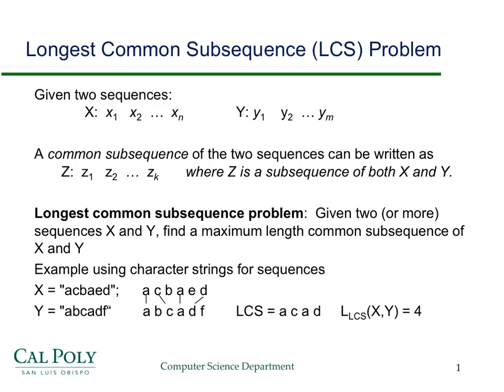This screencast is an extension of the screencast on the Longest Increasing Subsequence problem. This one covers the Longest Common Subsequence problem. We are given two sequences and we want to find the common subsequence between them — some sequence Z that is a subsequence of both sequences X and Y. The easiest way to think about it is with an example.